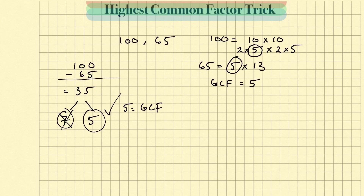I just wanted to show you these two methods side by side. The traditional method is what they teach in school, and there's nothing wrong with it. The method I showed you is basically a shortcut — however, you really need to know your divisibility rules, how to check for divisibility by numbers like 7, 14, etc. The traditional method requires you to break down numbers into their most basic components and simply match up the numbers together.